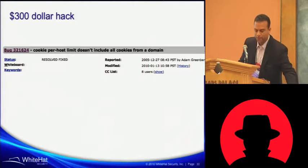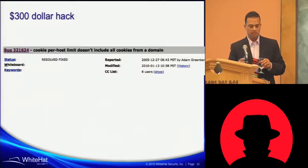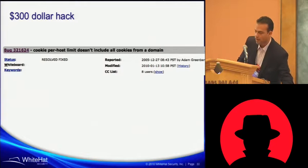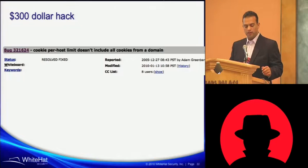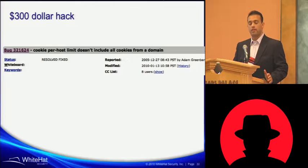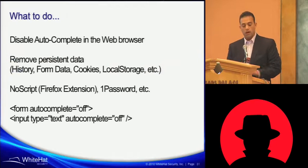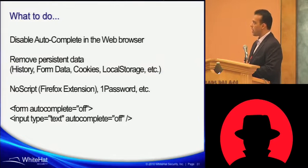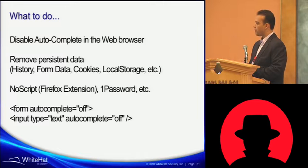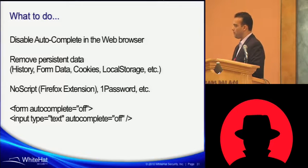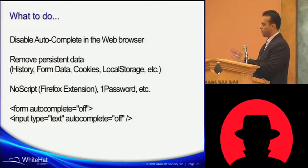So what have we got so far? The people in this room aren't necessarily the victims the bad guys are targeting — they are going to target family members, enterprise users still on IE6 and things like that. What you can do: disable auto complete in the browser as much as you can tolerate. Remove persistent data — history, form data, cookies, local storage. If you are using Firefox: NoScript, 1Password. And if you are a website owner, autocomplete equals off will prevent your form fields from saving in the auto complete data, so you can help protect your users just a little bit.